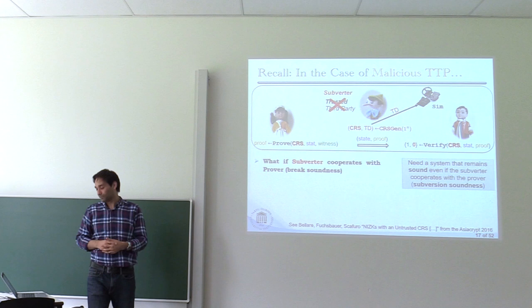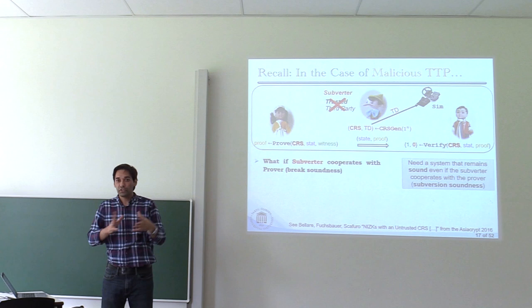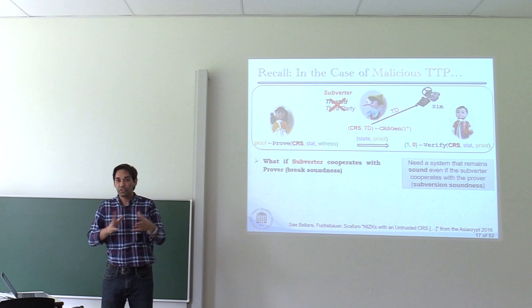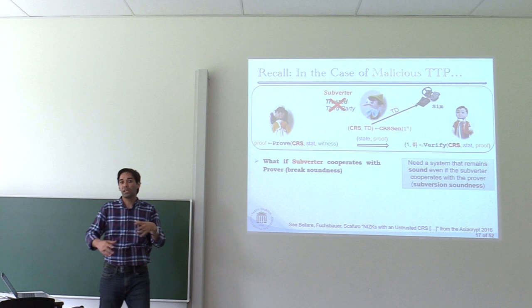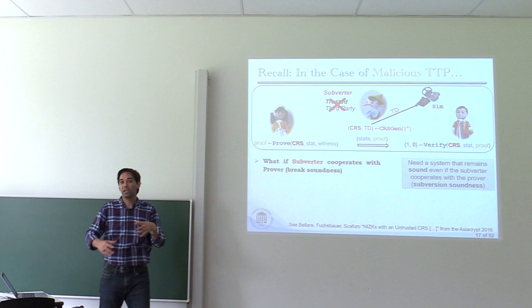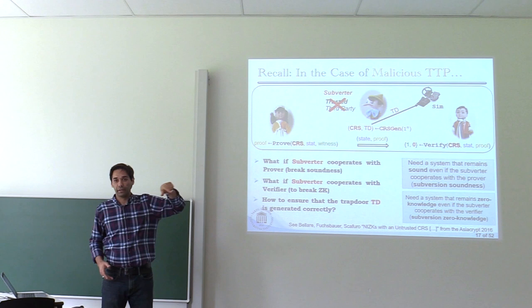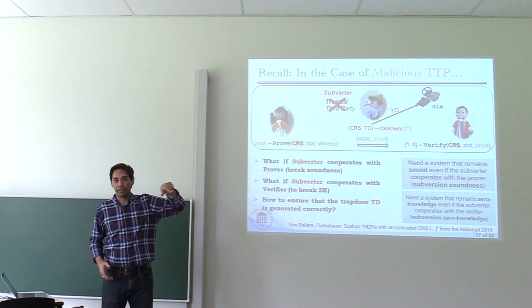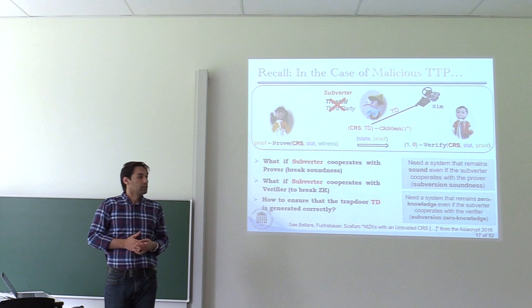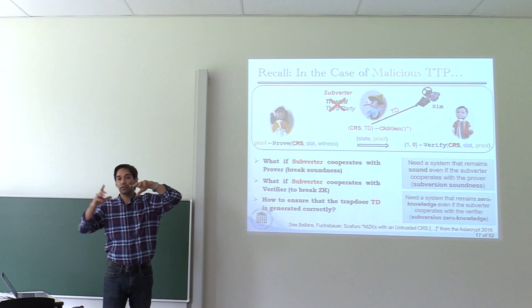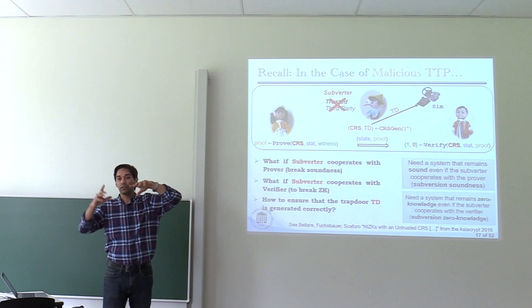If you want to achieve subversion security about soundness, we need a system that remains sound even if the subverter — the CRS generator — cooperates with the prover. The second case is when the third party cooperates with the verifier: what if these two collaborate to break zero-knowledge, to learn more than they were supposed to about the witness? In 2016, Bellare et al. studied the security of non-interactive zero-knowledge proofs under subverted CRS. They showed that subversion-sound and subversion-zero-knowledge together are impossible, because when you have zero-knowledge you have a simulator that without witnesses can generate a fake proof — this directly gives an adversary that can break soundness.